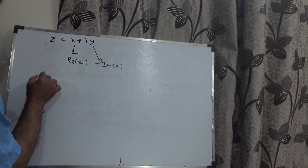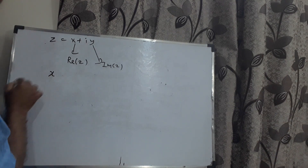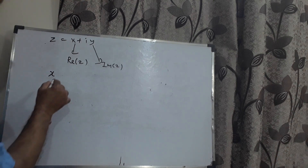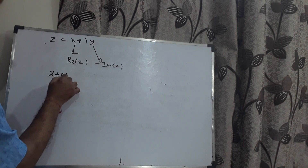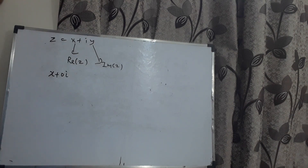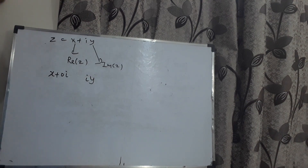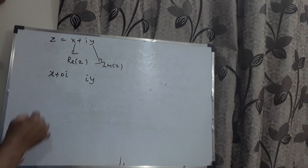Any real number is also a complex number, which is a purely real complex number. Any number x can be written as x plus 0·y. Any complex number whose imaginary part is zero is called a purely real complex number. Any number of the form iy, having real part zero, is called a purely imaginary complex number.